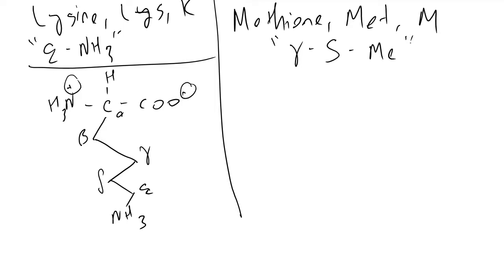And it looks like this. We will have our alpha carbon here. We know what the rest of this amino acid looks like. And we will have the beta carbon, the gamma carbon, a sulfur, and then a methyl group.